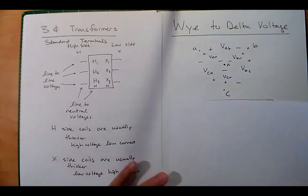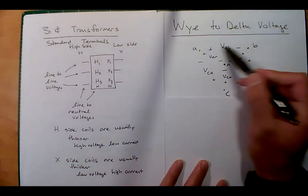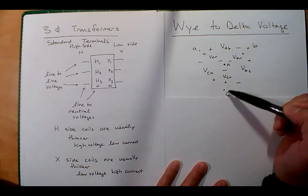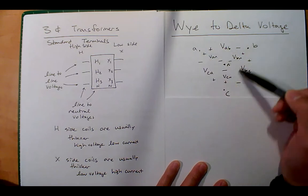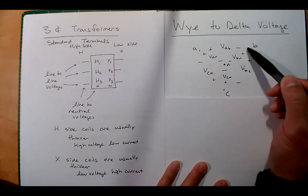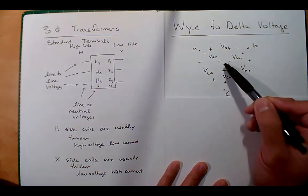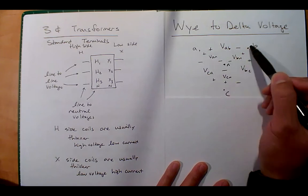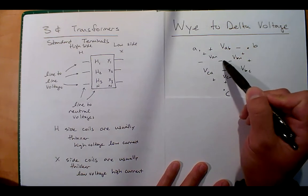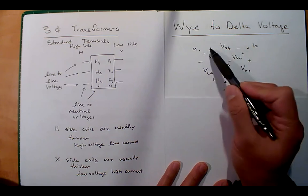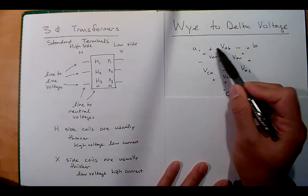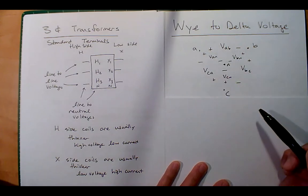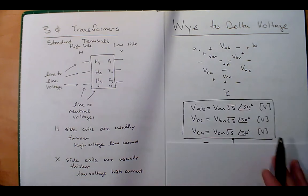Let's do a little review on Y-delta. I have a triangle with points A, B, C and the line-to-line voltages VAB, VBC, VCA on the outside. The neutral is drawn in the middle, and you have three voltages VAN, VBN, VCN. Notice the polarity — the first letter is the positive terminal. If the first letter is positive, that pattern works for all six voltages listed.